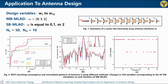A series fed microstrip array antenna is used as an example for the SBMLAO method. The searchability with LCB constant equal to two is better than others. The optimization results of MBMLAO are close to the best case of SBMLAO. The selection of omega will affect the searchability, but MBMLAO is more robust.